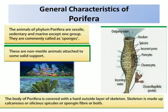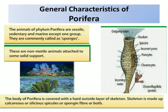Characteristics of Phylum Porifera: the animals of Phylum Porifera are sessile — it means they are not able to move, they are sedentary, non-motile, and attached to some solid support. They are mostly marine, living in seawater and ocean water, except one family, Spongillidae, which are commonly known as sponges. They are known as sponges because their body has millions of pores, making them sponge-like.